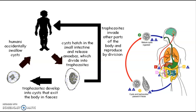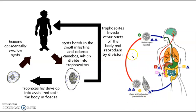The cysts pass into the large intestine and are excreted with stool back into the environment — in soil or wherever the stool is passed. From there, they can be ingested by another healthy person, completing the cycle. The cycle proceeds from stomach to small intestine to large intestine, where trophozoites are released and produce more cysts.